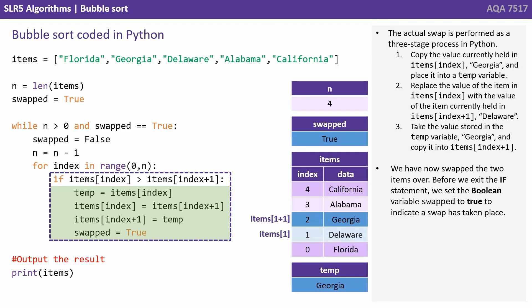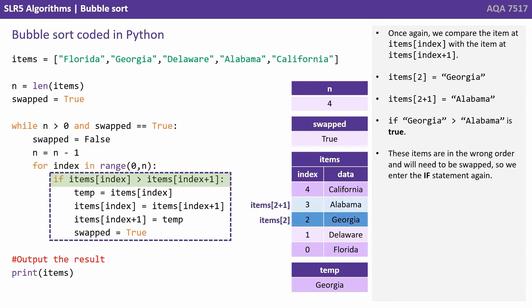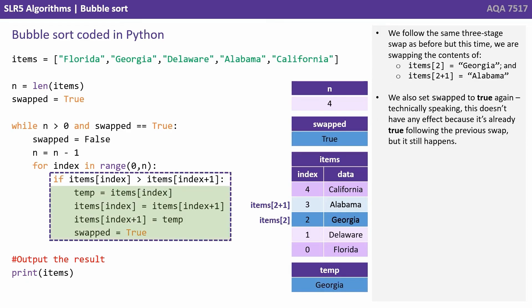Now before we exit the if statement, we set our boolean variable swapped to true to indicate that a swap has taken place. The for loop increments its internal index value from 1 to 2 and we enter the for loop again. We're comparing Georgia to Alabama — Georgia is greater than Alabama is true, so these items are in the wrong order and we'll need to perform a swap. We follow the same three-stage swap. We also set swap to true again — technically this doesn't have any effect as it's already true following the previous swap, but it still happens.